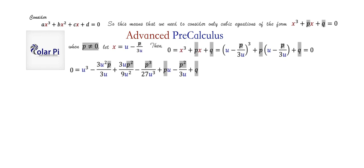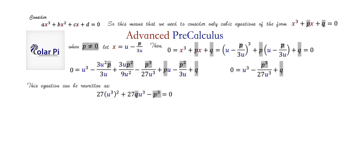After a little more simplifying it cleans up really nicely and reduces to this. This expression can be rewritten by multiplying both sides by 27u³.